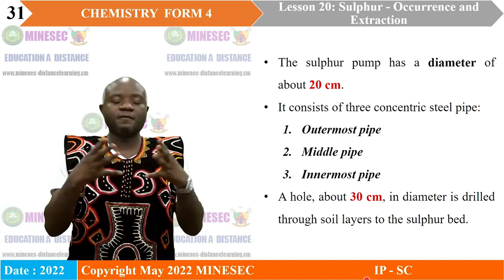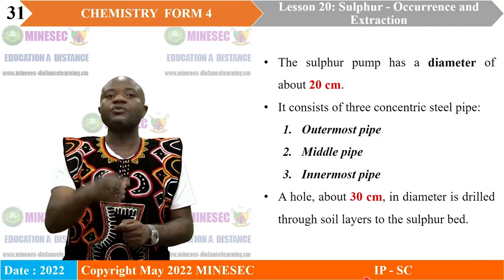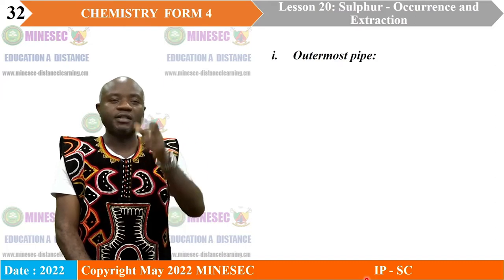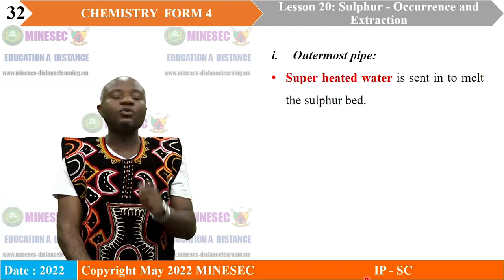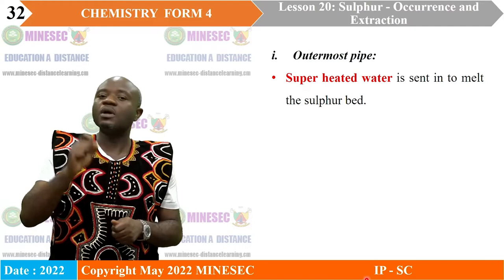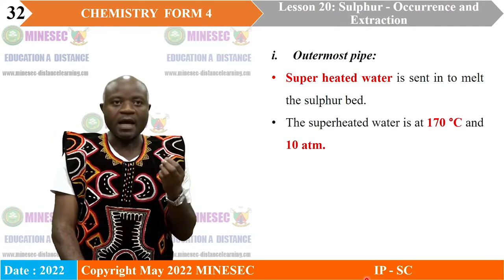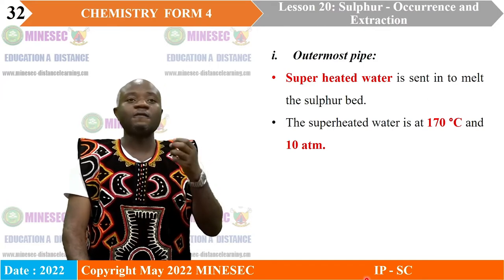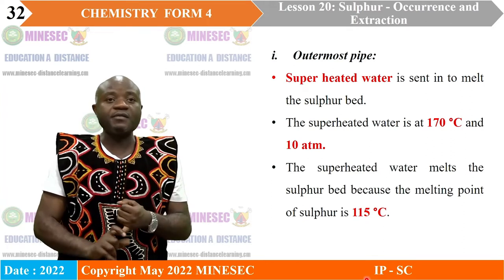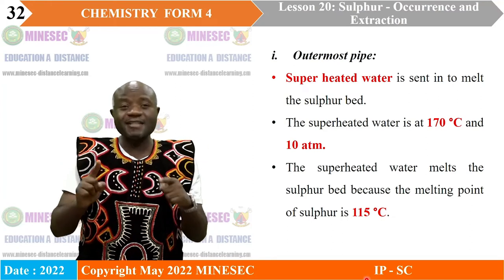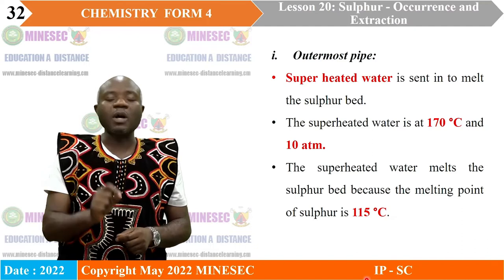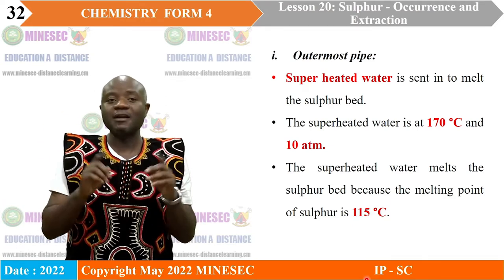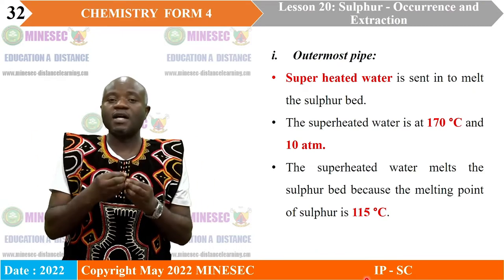During extraction by the Frasch process, a hole with a diameter of about 30 centimeters is drilled through different soil layers onto the sulfur bed. After that hole has been drilled, the sulfur pump is sent into the hole. Through the outermost pipe, superheated water is sent in to melt the sulfur bed. This superheated water exists at a very high temperature — 170 degrees Celsius and a pressure of 10 atmospheres. The primary purpose of the superheated water is to melt the sulfur bed, which is possible because the melting point of sulfur is 115 degrees Celsius.